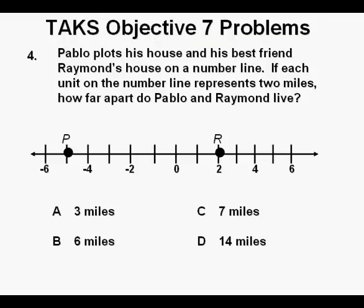Problem 4. Pablo plots his house and his best friend Raymond's house on a number line. If each unit on the number line represents 2 miles, how far apart do Pablo and Raymond live?